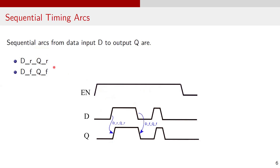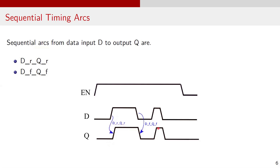First, the sequential arcs from data input D to output Q. We assume we are discussing a positive level sensitive latch. For this latch, when enable is high, output Q follows data input D. As seen in the waveforms, whenever D changes, Q changes as well. This relationship gives the timing arcs D rise → Q rise and D fall → Q fall.